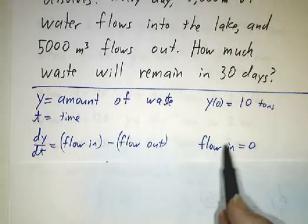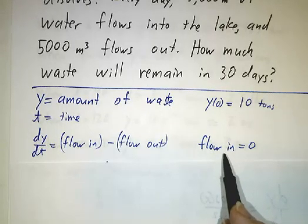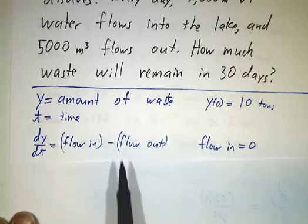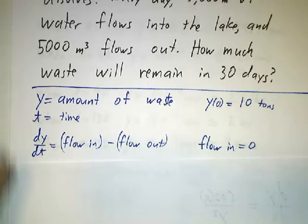Now in this example, there's nothing flowing in. The only thing that's flowing into the lake is clean water. The toxic waste was dumped there once in an accident and doesn't continue to get dumped. We have to figure out at what rate is the stuff flowing out.